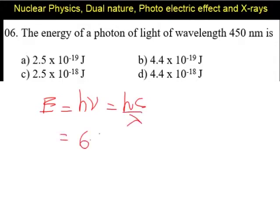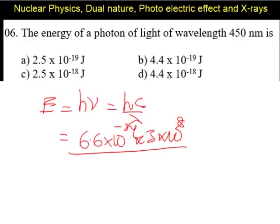H is 6.6 into 10 power minus 34. C is 3 into 10 power 8 by lambda is 415 nanometers. Nanometers can be converted into meter. We can write like this.